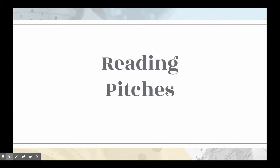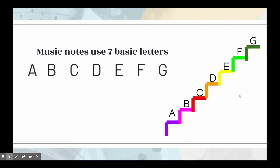Hi, Ms. Sullivan here, and we're going to connect some of the work we've been doing about reading pitches. We know that there are about seven basic letter names on our instruments: A, B, C, D, E, F, G, and those repeat. Now you might sometimes see an F sharp or B flat, but the seven basic letters are the same.